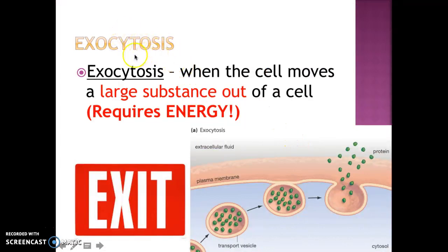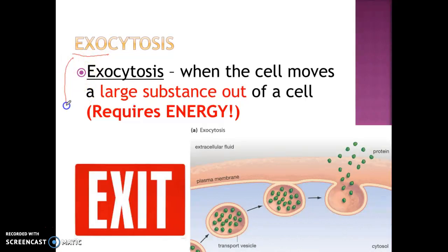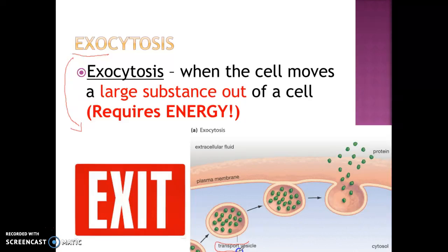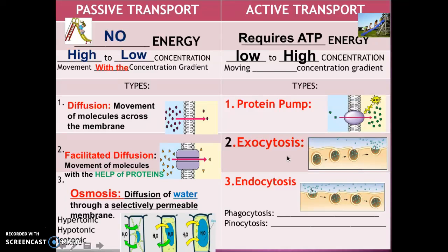The next type is exocytosis. 'Exo' means exit — when cells move large substances out of the cell, and this obviously requires energy. The cells move these molecules in little transport vessels, and it's large amounts of material going out of the cell, as this picture implies. This requires a lot of energy from the cell.